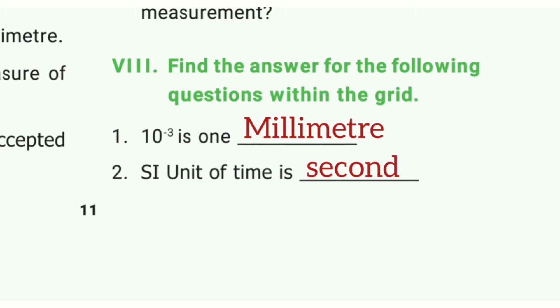Find the answer for the following questions within the grid. First one: 10 to the power of minus 3 is 1 dash. The answer is millimeter. Second one: SI unit of time is dash. The answer is second.